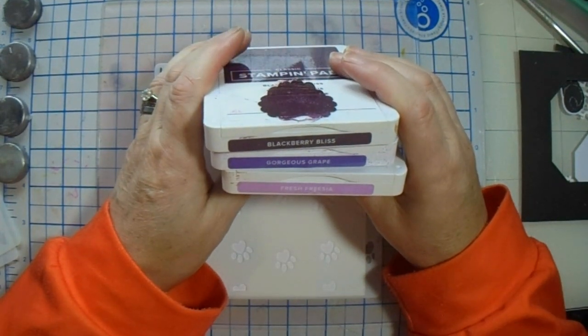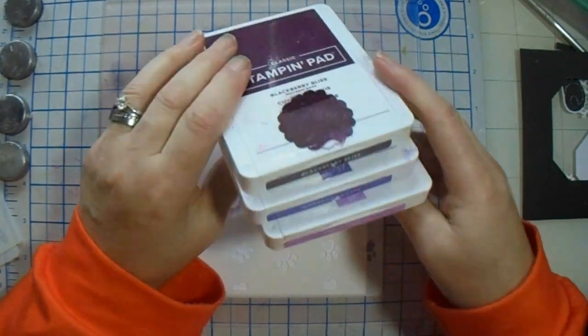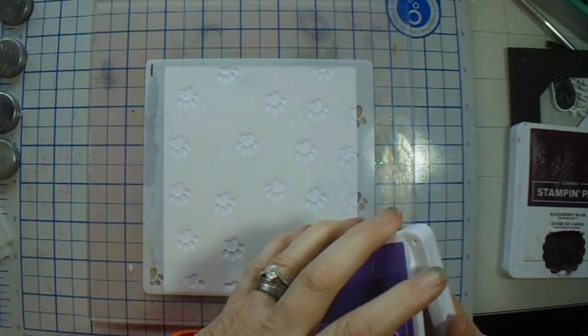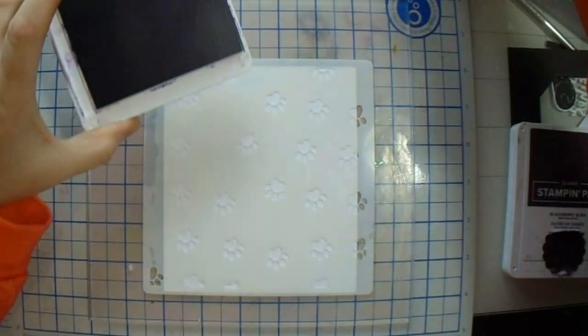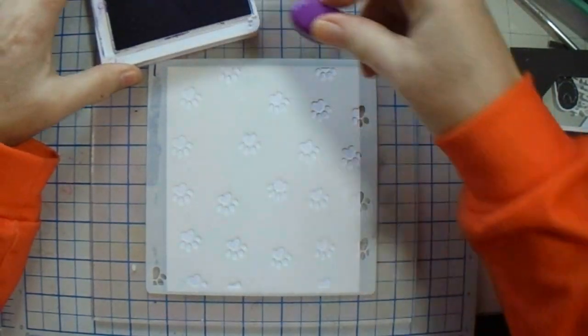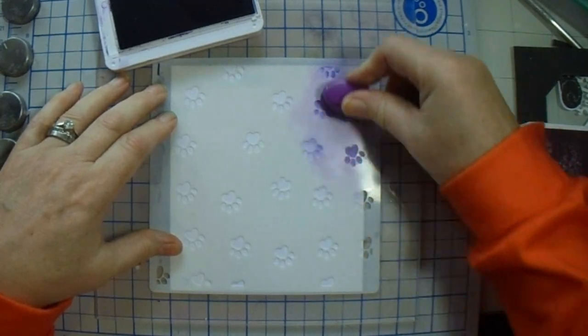I'm using Fresh Freesia, Gorgeous Grape, and Blackberry Bliss. I'd rather have the hearts in Fresh Freesia, so we'll go Gorgeous Grape and Blackberry Bliss for our paw prints. We're using our dye ink brushes today.